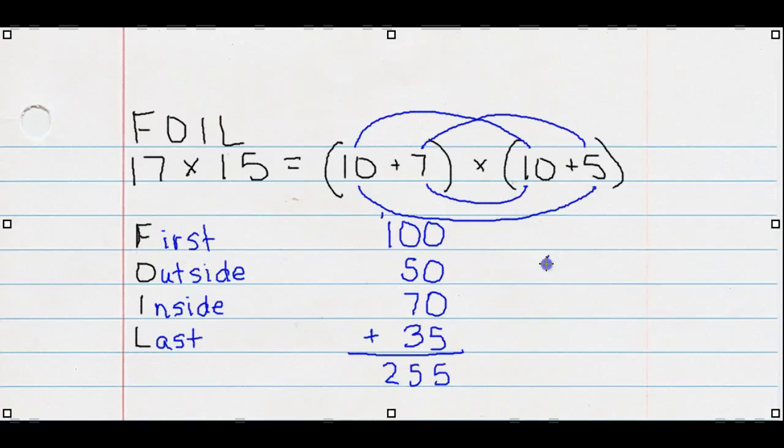Now I'm going to check real quick with the standard algorithm just to make sure that that number is correct. So that gives me 35. Carry. 5 times 1 is 5, 6, 7, 8. And then I'm going to put my x there. 1 and 7. And then 5, 5. So the FOIL method works.